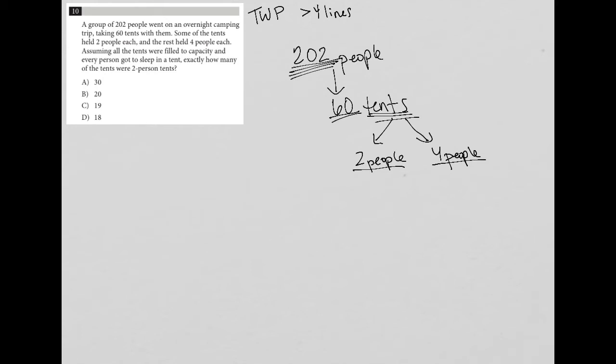So the thing with this type of question is it really lends itself to kind of guessing and checking. However, because we have our answer choices here, I'm going to say this really comes down to a process of elimination type of scenario. So the most well-known strategy on this test or any multiple-choice test is typically process of elimination. So what I mean by that is each of these answer choices represent two-person tents.